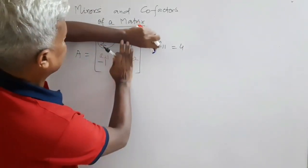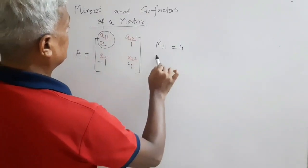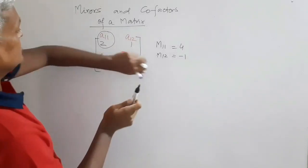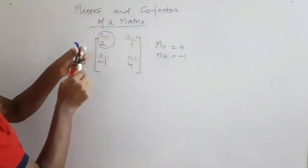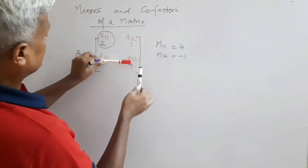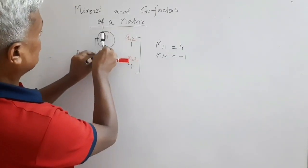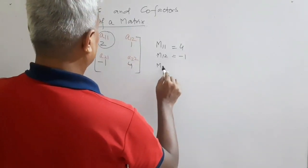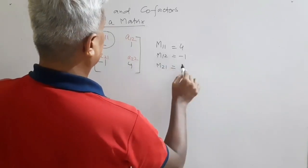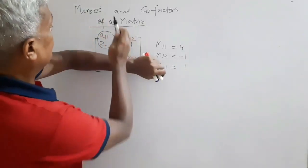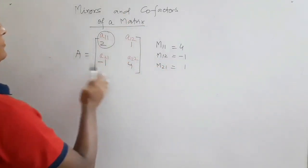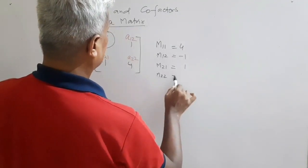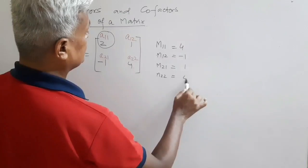Now for M12: cover the first row and second column, leaving minus 1. So minor of A12 is minus 1. For M21: cover the second row and first column, leaving 1, so minor of A21 is 1. In a 2x2 square matrix the remaining elements are just diagonally opposite, so minor of A22 is also 4.